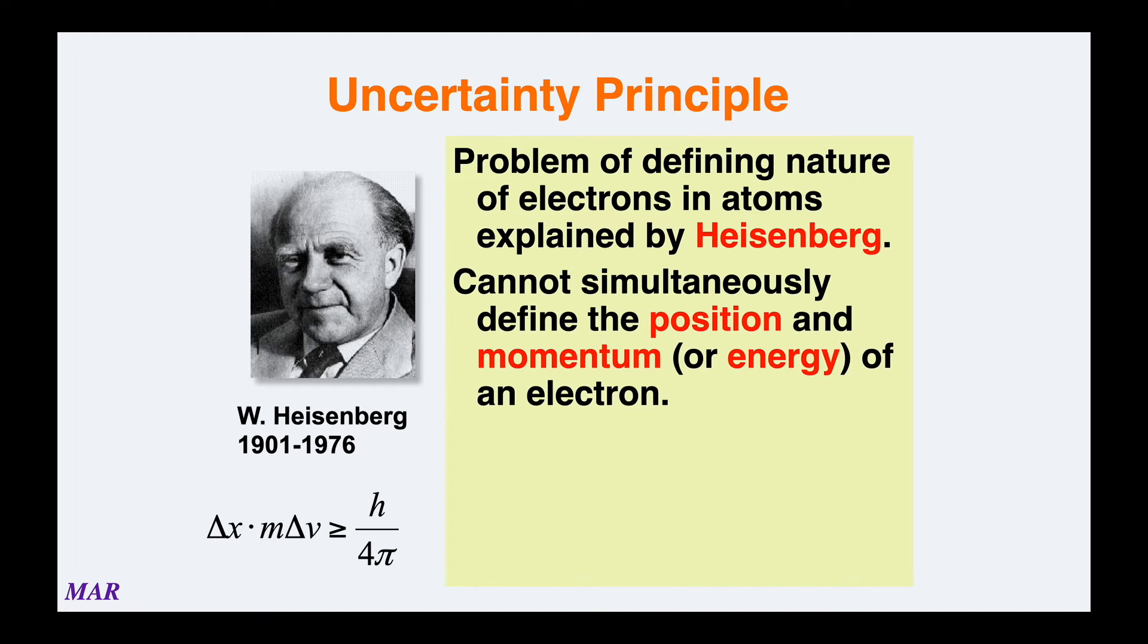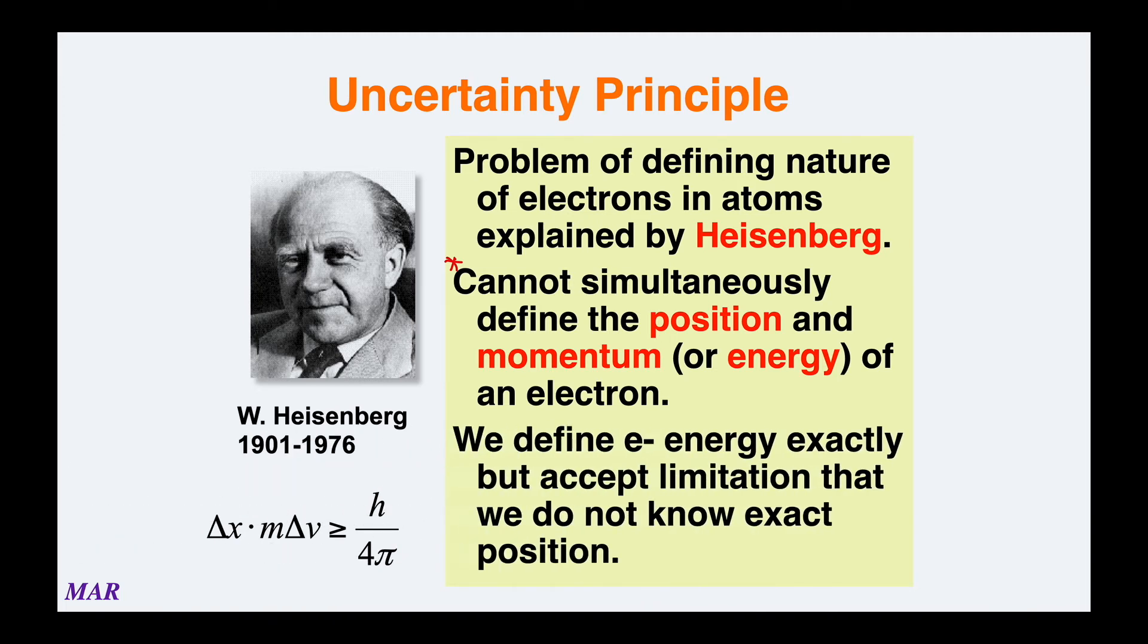Heisenberg came up with the uncertainty principle. What the Heisenberg uncertainty principle is about is that you can't simultaneously know the position and the energy of an electron at the same time. It's momentum, which is mass times velocity, but momentum and energy are closely related. You have to make a choice, you can know one or the other.